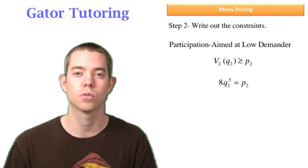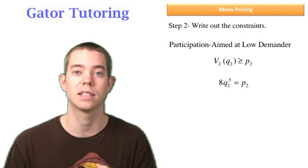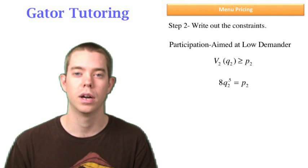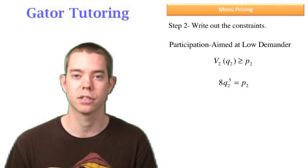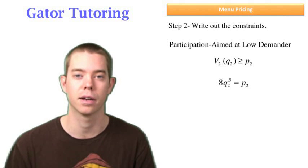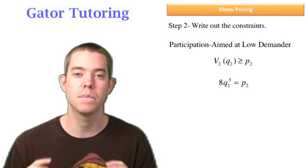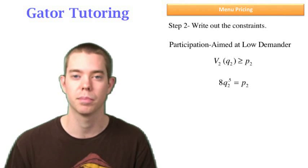So q2 in this case represents, just for simplicity sake, let's say that single pack of gum, right? And then q1 is going to represent that big box of a lot of packs of gum. So p2 represents the price of that single pack of gum or the small bundle. And p1 in this case represents the price of that big box of gum, which is the big bundle.